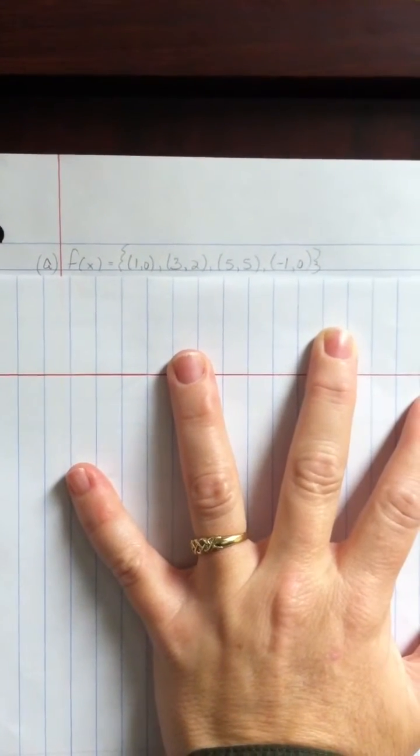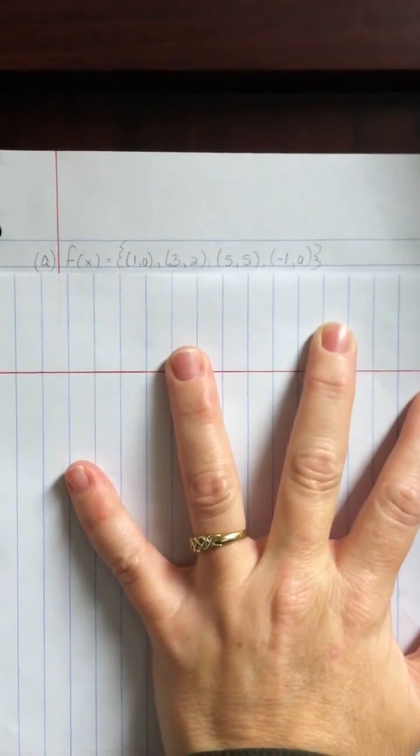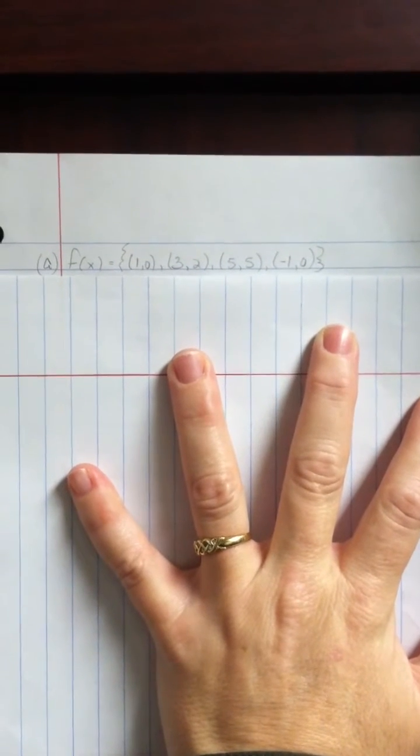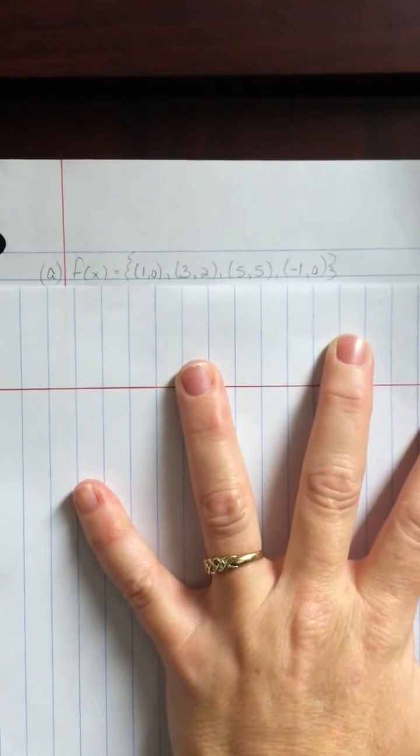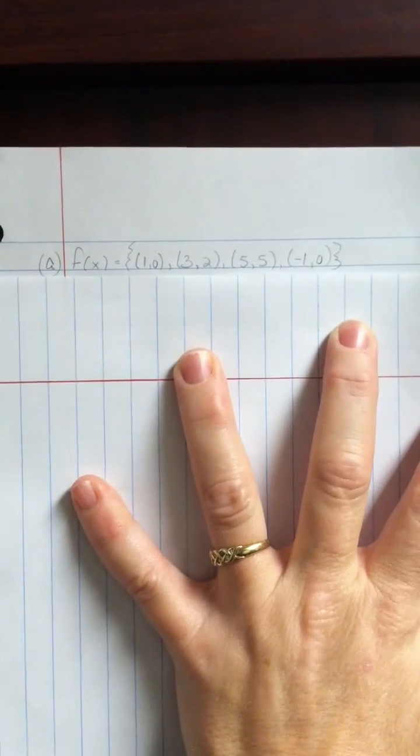Determine if the relation is a one-to-one and whether or not it has an inverse. So our numbers f(x) are: (1, 0), (3, 2), (5, 5), and (-1, 0).